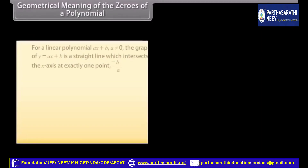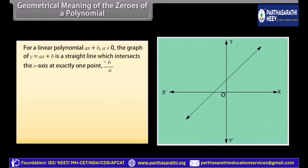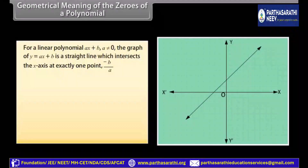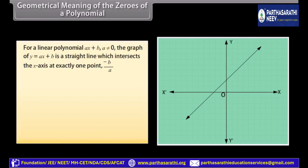Geometrical meaning of the zeros of a polynomial: For a linear polynomial ax plus b, where a is not equal to 0, the graph of y equals ax plus b is a straight line which intersects the x-axis at exactly one point, minus b upon a. Therefore, the linear polynomial ax plus b has exactly one zero.